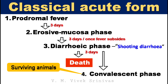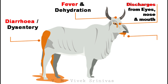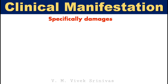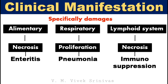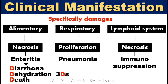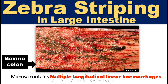Death rates in this infection are extremely high, reaching up to 100%. The schematic diagram illustrates the external clinical manifestations generally exhibited in Rinderpest infection, including shooting diarrhea, dysentery, fever, dehydration, nasal, ocular, and oral discharges, stomatitis, and foul breath. This virus specifically damages the alimentary, respiratory, and lymphoid systems, leading to enteritis, pneumonia, and immunosuppression respectively. The picture shows necrotic oral lesions (oral stomatitis) in the erosive phase, and zebra striping in the large intestine due to multiple longitudinal linear hemorrhages.